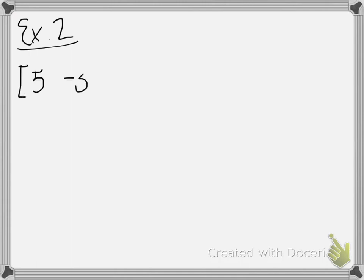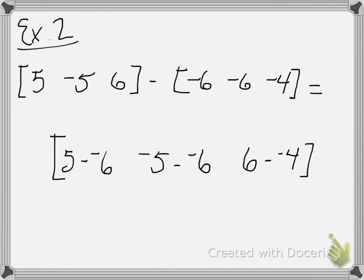All right, we can do the same thing with subtraction now. So here are two row matrices, 5, negative 5, 6, minus negative 6, negative 6, negative 4. So what we're going to do here, same thing we did with the first example, except now we're going to subtract corresponding matrices. So I'm going to break this down a little bit further for you. So the first element is now 5 minus negative 6. The middle element is now negative 5 minus negative 6. And the third element is 6 minus negative 4. Why did I do this? Because subtraction, especially when you're doing subtraction with negative numbers, can get a little tricky.